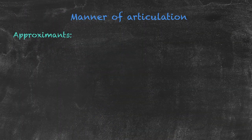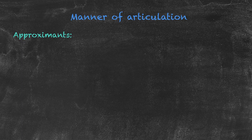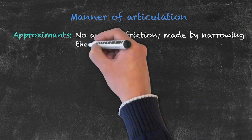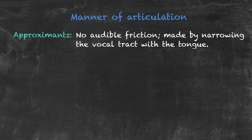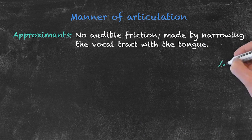Finishing off our manner of articulation, we have our approximants. There are three approximants. The reason they're called approximants is because our vocal organs are approximately in the middle of our mouth. The big factor here is that there isn't any audible friction — air is moving freely, but the vocal organs are not close enough together to create audible friction.